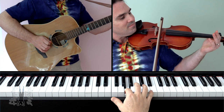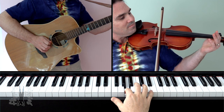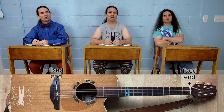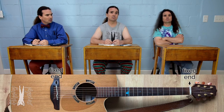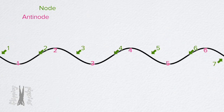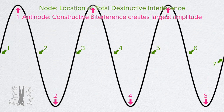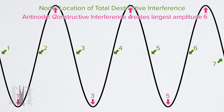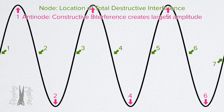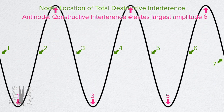Stringed instruments use standing wave patterns to create frequencies which our brains interpret as pitch. These instruments have strings which are fixed in place on either end. What does having ends which are fixed in place mean in terms of nodes? Can you bring back the animation which shows the nodes and antinodes on a standing wave pattern?